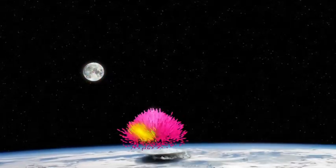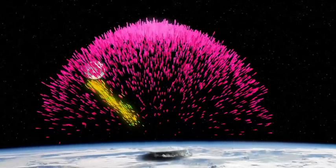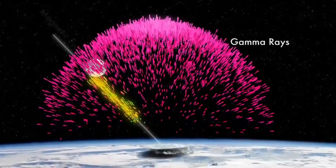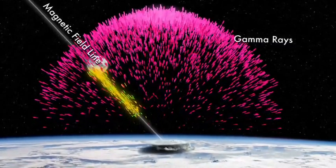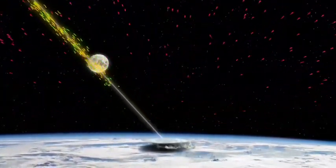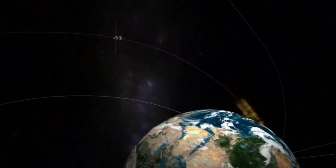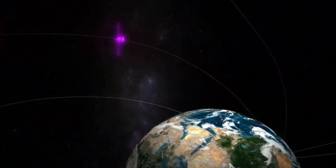The gamma rays travel in straight lines, but the charged particles spiral along lines of Earth's magnetic field. And that was the route to Fermi. The particles created by the TGF rode upward on magnetic field lines and then struck the spacecraft.